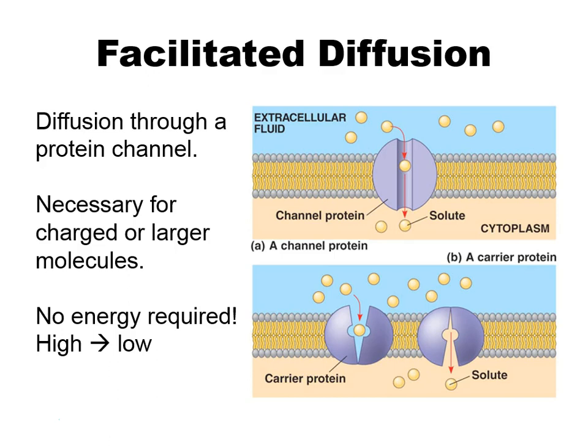Facilitated diffusion is just diffusion through a protein channel. It's going to be necessary for charged or larger molecules — anything that can't go directly through the cell membrane is going to need channels. Because you're still going from high to low concentration, there's no energy required. Even if you're using a carrier protein or channel protein, it's still passive transport because there's no energy.